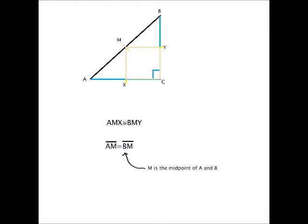This means that line segments AM and BM are therefore the same length, which means that M is the midpoint of A and B because it lies in the middle.